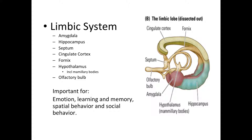Moving on from short-term memory, let's talk more about the anatomy of the brain structures that are super important for memory — the limbic lobe or limbic system. We previously talked about the limbic system briefly, but it contains more than just the amygdala and hippocampus. The limbic system actually includes the amygdala, hippocampus, the septum, the cingulate cortex, the fornix, the hypothalamus, and other structures like the thalamus and the olfactory bulb. It is really important for emotion, learning, memory, and also facial and social behavior.